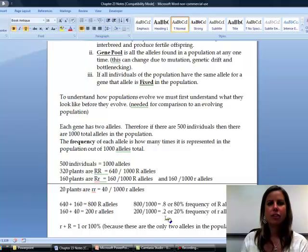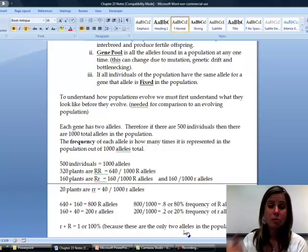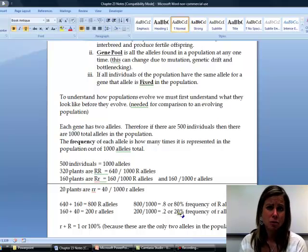Now the reason we're looking at this is because this is how you can tell if a population is evolving from one generation to the next without seeing something major physically happening. So if we did our initial survey of this group of plants or whatever it is, let's say that it started out at 80 and 20. And let's say we come back in a couple of years, and there's been a couple of generations, and now the big R allele frequency has gone up to 82%, and the little R allele has gone down to 18%. We can say that population has evolved because the allele numbers have changed. Okay, so any time allele numbers are changing, evolution is happening.